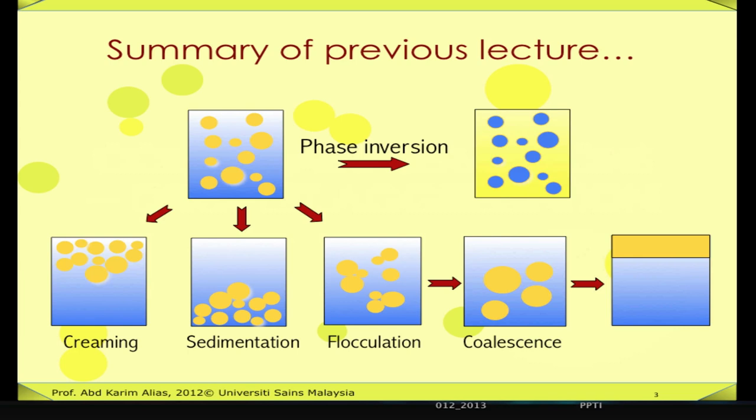Excellent. So why is it important to understand about colloidal interactions? In an emulsion, the droplets are always trying to come close together due to some intermolecular forces and this could lead to aggregation, such as flocculation. So if we understand the nature of interaction between droplets in the emulsion, we can figure out ways to make a stable emulsion.